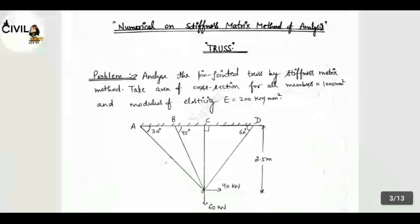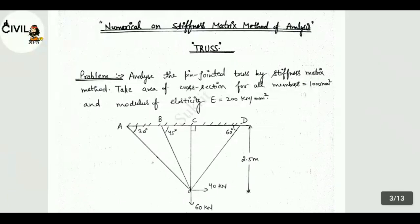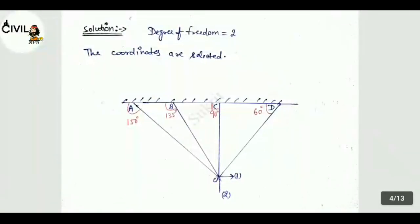From the angle of geometry, you have found out that angle OAB here is 150 degree, angle OBC is 135, angle C is 90 degree, angle D is 60 degree.